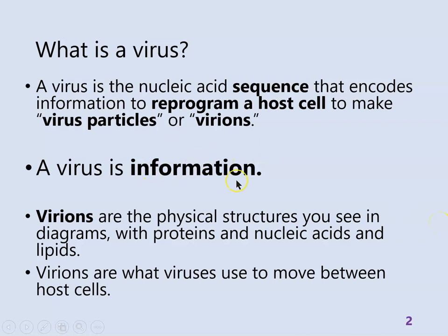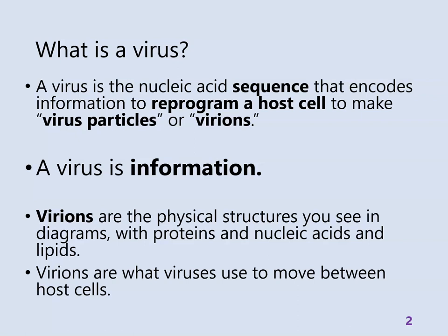A virus is information. It's a nucleic acid sequence. The nucleic acids we think about most are RNA and DNA. A virus is just one of those sequences, and it encodes information that reprograms a cell and forces that cell to make virus particles, or what we call virions. So a virus really is the information that encodes controlling a cell and encodes how to make a virion.